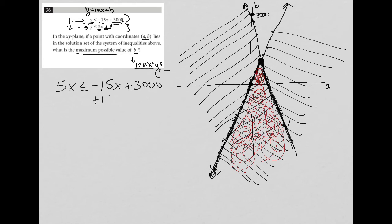And now I'm going to simplify this. I'm going to add 15X to both sides. So I have 20X equals 3000 and divide by 20. Right. This is just say equals, not less than or equals. And I get X equals 150.